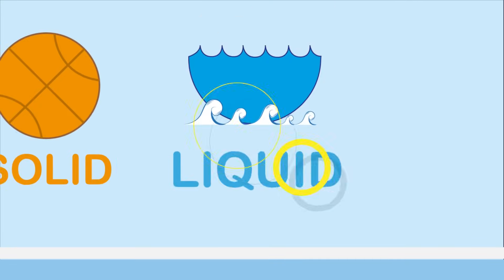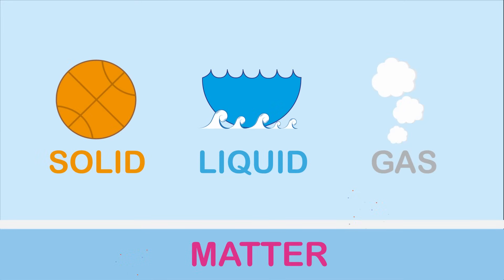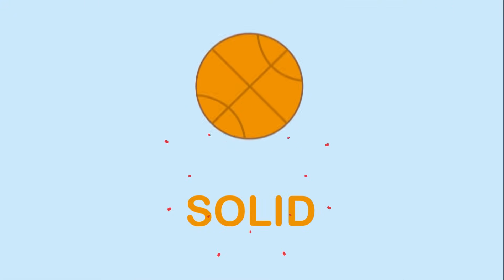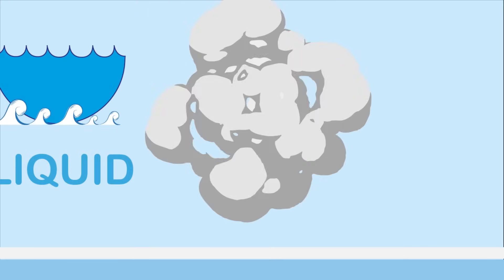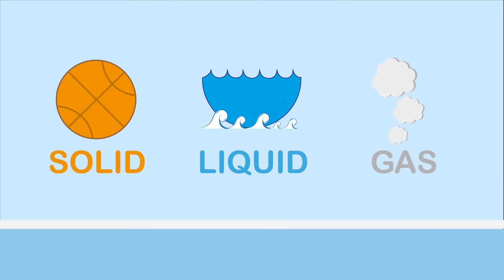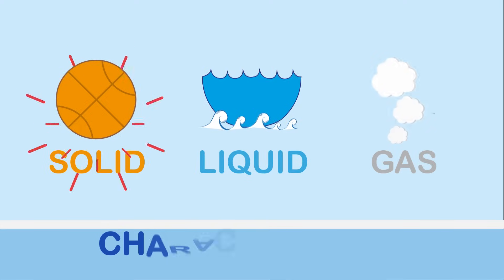Characteristics of Solid, Liquid, and Gas. Solid, liquid, and gas are all made of matter. But have you noticed that they all look different? Not only that, when you touch them, they feel different. Because solid, liquid, and gas are different states of matter, that also means they have different characteristics.